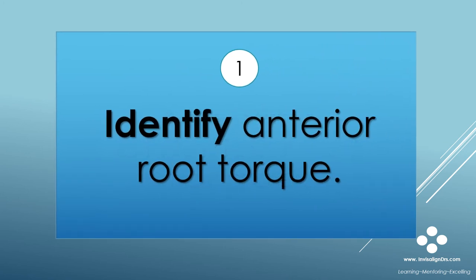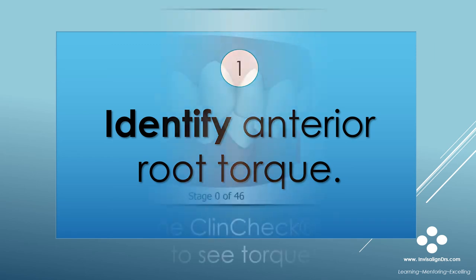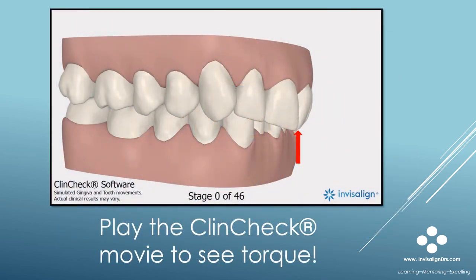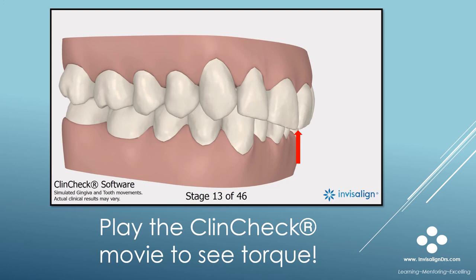So how do we determine if root torque is occurring in a ClinCheck? Here's a patient I've treated. Note that tooth 9 is tipped lingual to begin with. When I play the ClinCheck movie, you will see lingual root torque occurring with tooth 9. Note that the buccal-lingual position of the incisal edge does not change much — so that's root torque.